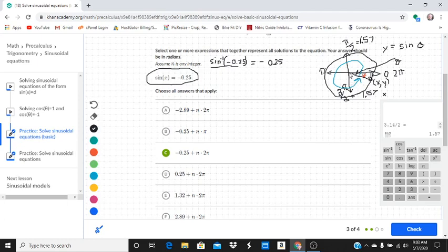So if this angle in here, if we call it theta, y is equal to the sine of theta. Well, here's the thing. When we go negative 0.25 over here, we're going to get the same y value, right? It's the same amount below the x-axis. So we're going to get the same y value.